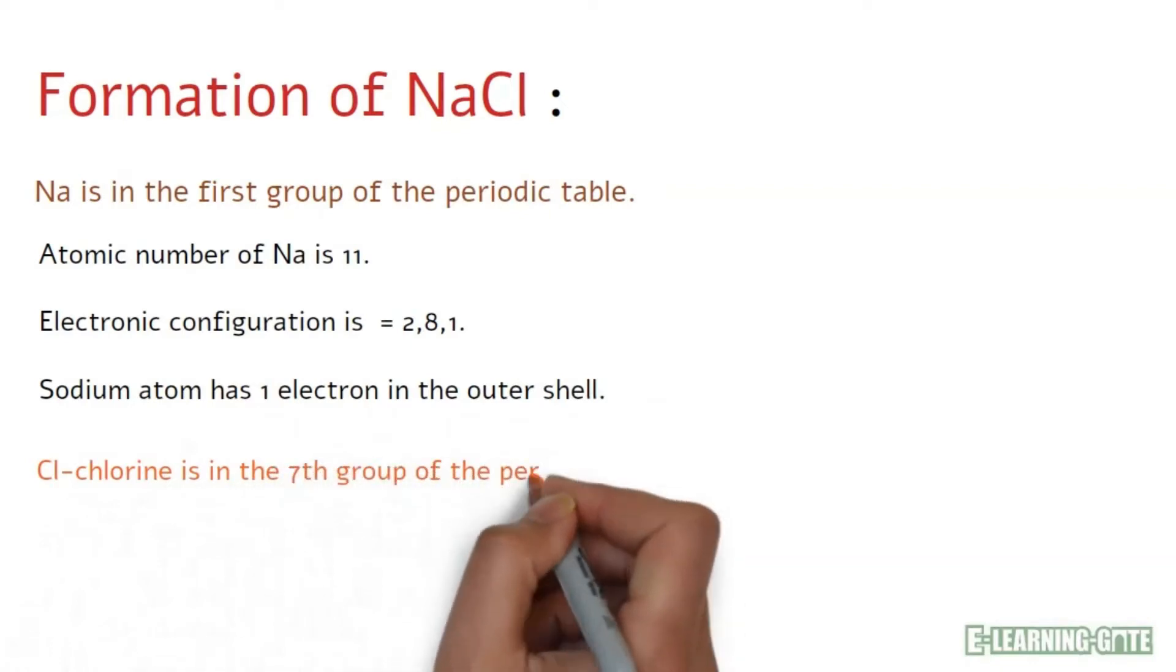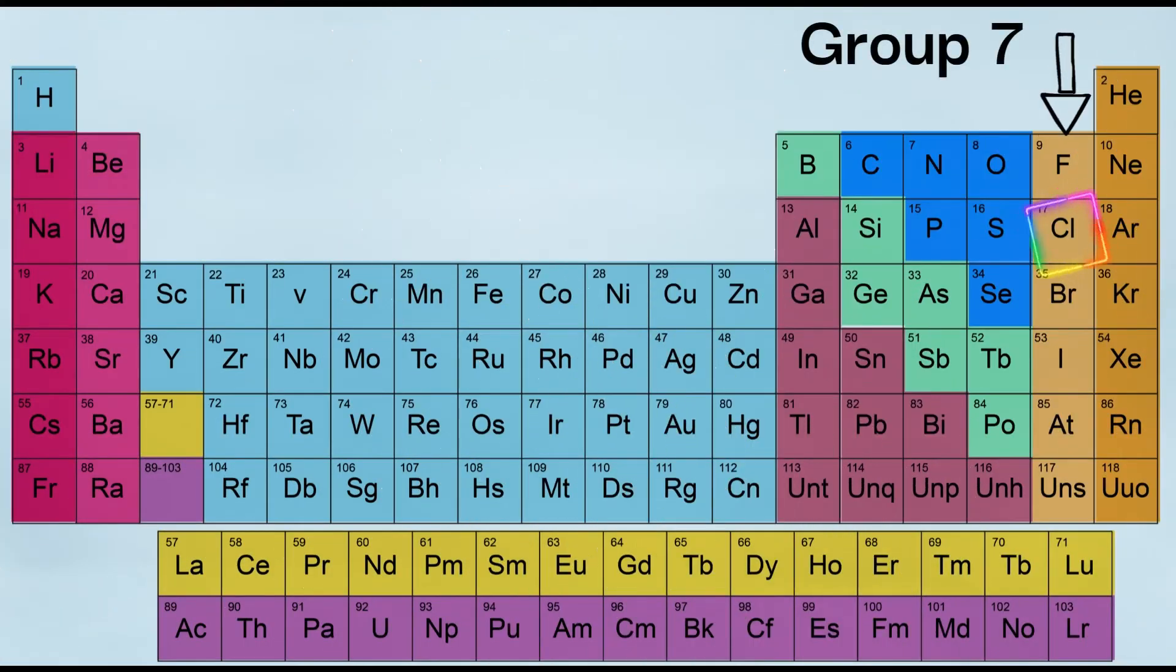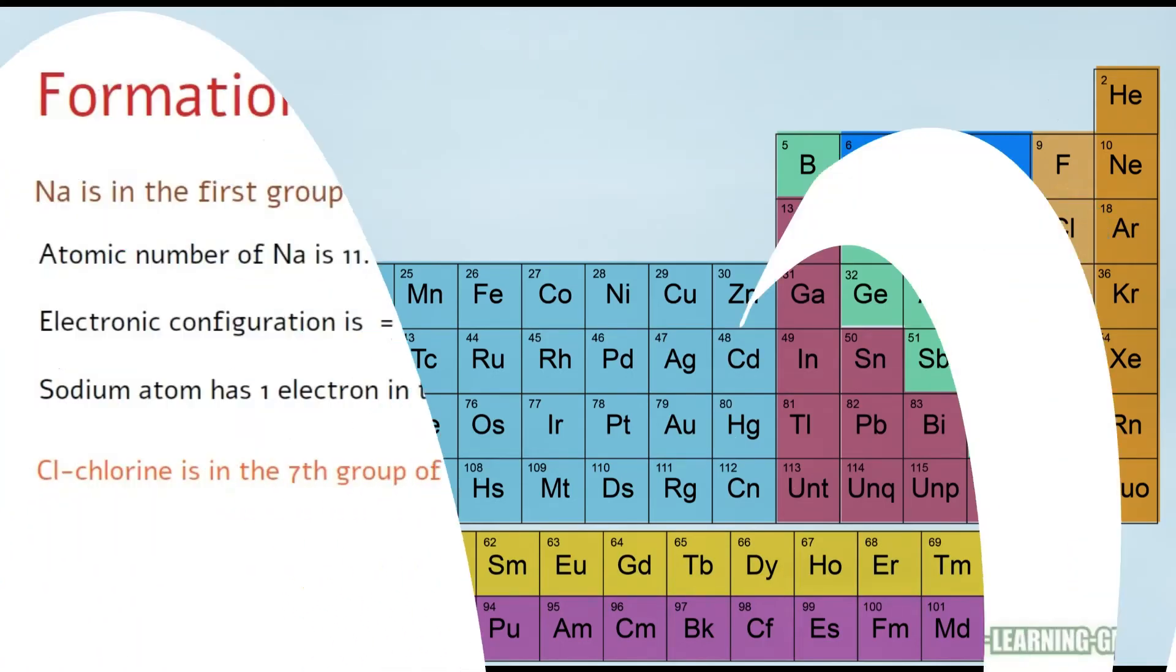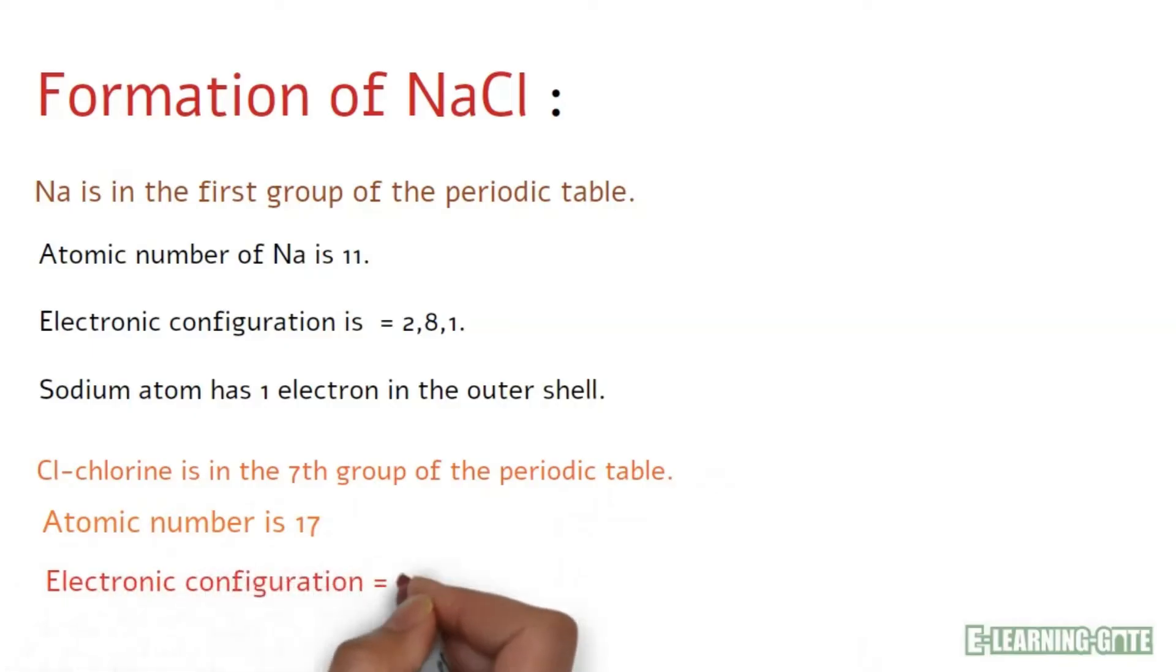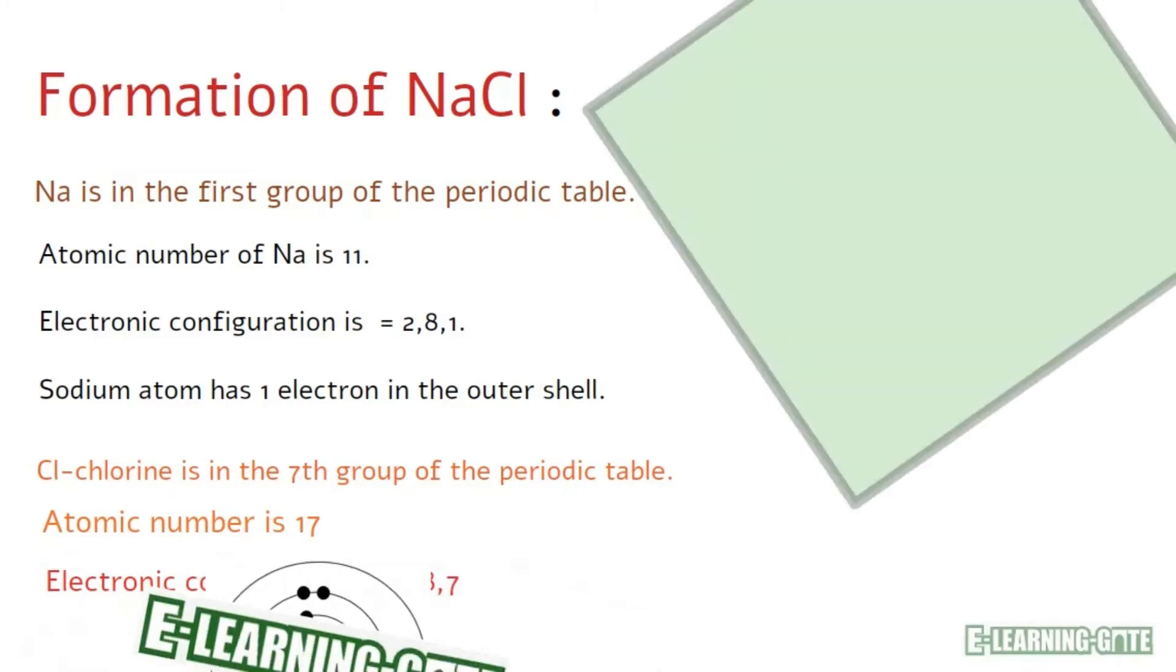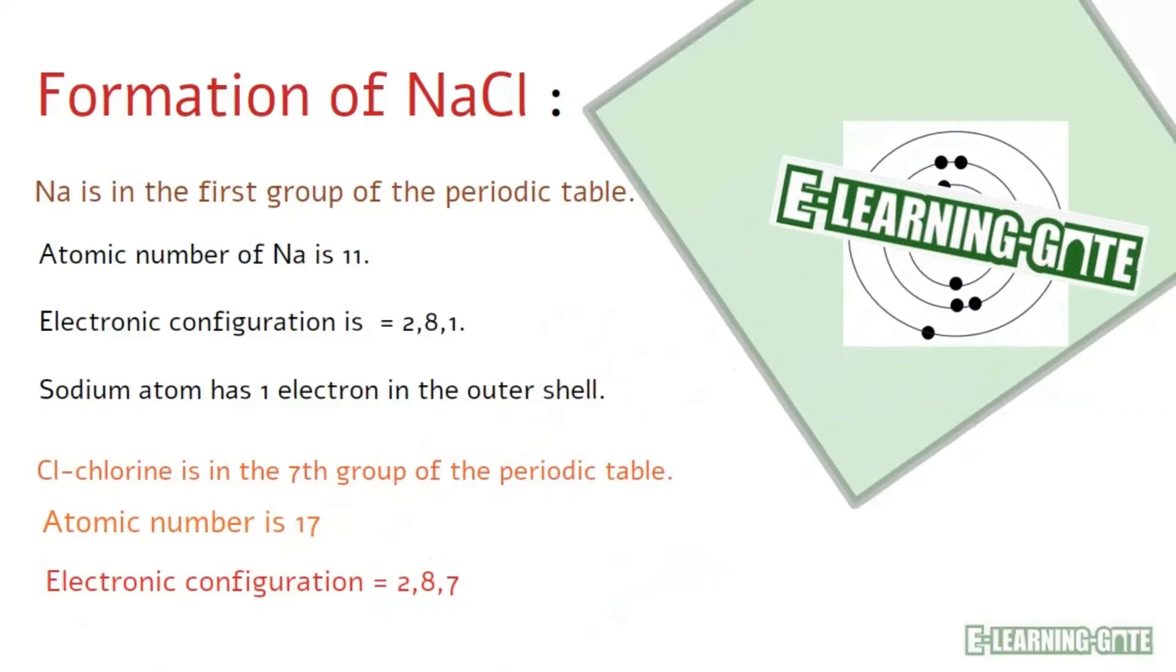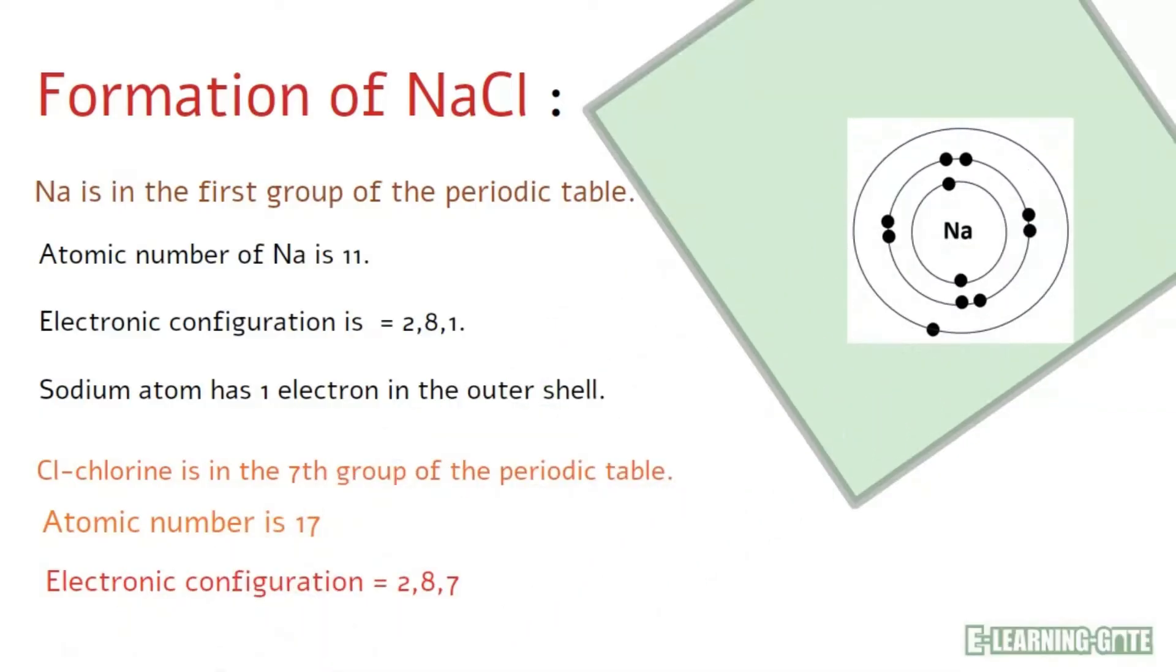Chlorine is in the seventh group of the periodic table. Atomic number of chlorine is 17. Electronic configuration shows that it has seven electrons in the outer shell. So, the one electron from the outer shell of sodium transfers to the outer shell of chlorine where seven electrons are present.